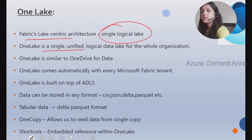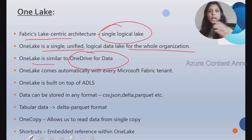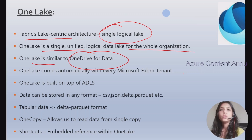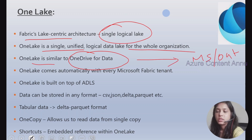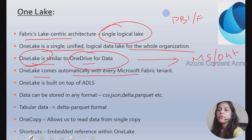One Lake is a single unified logical data lake for the whole organization. You can think of One Lake as a OneDrive for your data — just as in OneDrive you can access every product like MS Excel, SharePoint, or OneNote, similarly using One Lake you can interact with all the other components or experiences inside Fabric. Just as a OneDrive comes automatically when you create a Microsoft or Outlook account, One Lake comes automatically with every Fabric tenant without needing to be explicitly created.